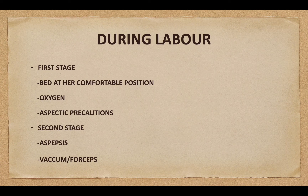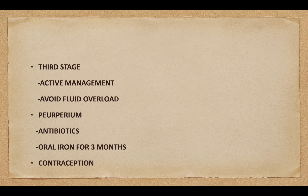During labour — 1st stage: the patient should be in bed at her comfortable position, oxygen administration should be given, and all procedures should be done under aseptic precautions. During 2nd stage: all procedures to be done under aseptic precautions and 2nd stage of labour should be cut short using vacuum or forceps. 3rd stage: active management of 3rd stage of labour should be followed, avoid fluid overload. In the puerperium, antibiotics should be given and oral therapy for 3 months.